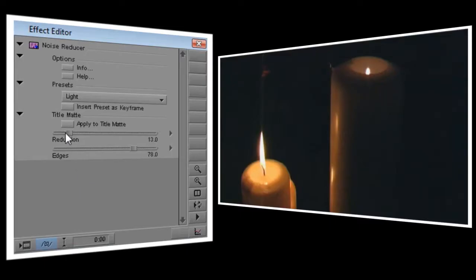The reduction control sets the amount of reduction that's applied — that's fairly obvious. But as you apply more reduction, your image will begin to lose clarity and become soft and mushy.